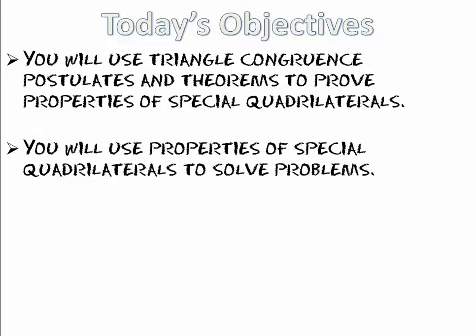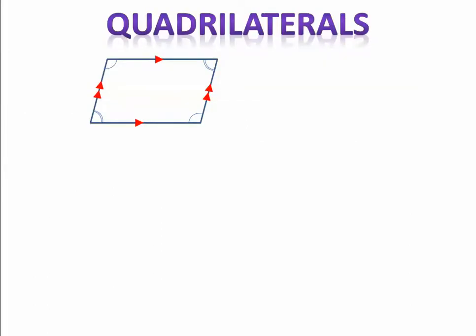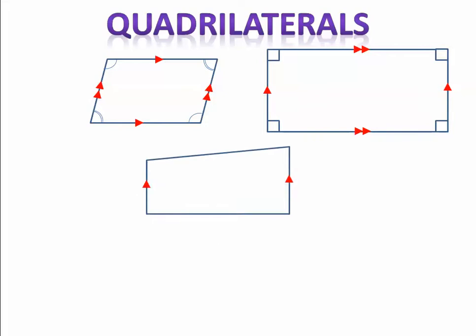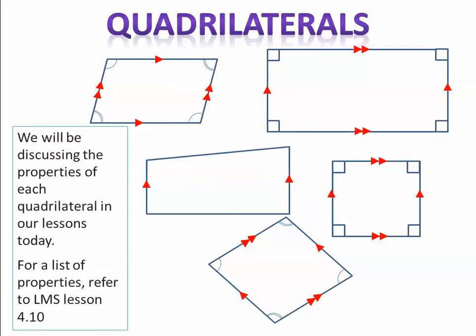You'll also use properties of special quadrilaterals to solve problems. Some of the quadrilaterals we've learned about in the past are a parallelogram, a rectangle, trapezoid, a rhombus, and a square. We'll be discussing the properties of each quadrilateral in today's lesson and in lesson 4.11, but you can refer to the LMS lesson 4.10 or your notes. Today our focus will be on the parallelogram.